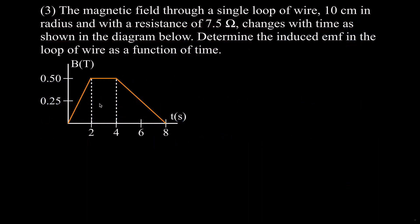Problem three: we have a magnetic field through a single loop of wire with a radius of 10 centimeters and a resistance of 7.5 ohms, which changes with time as shown in a graph. The magnetic field starts at 0, increases over 2 seconds to 0.5 Teslas, is constant for 2 seconds, then decreases over 4 seconds back to 0. We want the induced EMF as a function of time. Faraday's Law says a voltage is induced when magnetic flux changes — where it's not changing, there will be no induced voltage.